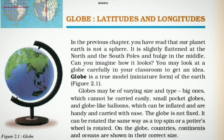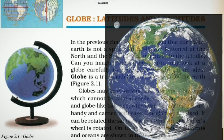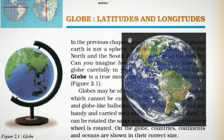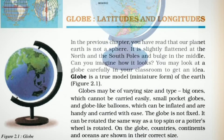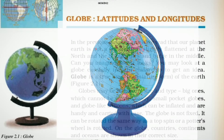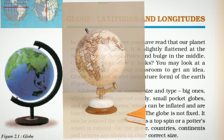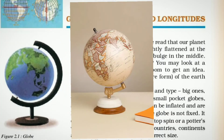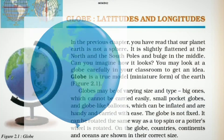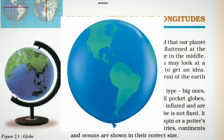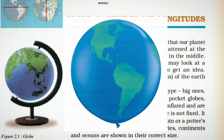Children, you know very well that our planet Earth is slightly flattened at the North and the South Poles, and bulges in the middle. Look at a globe. Globe is a miniature form of the Earth. Globes may be of varying size and type — big ones which cannot be carried easily, small pocket globes, and globe-like balloons which can be inflated and are handy and carried with ease.